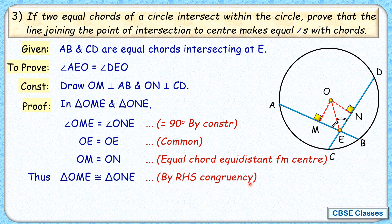Now as the triangles are congruent then of course the corresponding parts will be equal. So we can say that angle OEM or MEO is equals to angle NEO by CPCT. As this MEO is equals to NEO, so basically AEO is equals to angle DEO. And that's what we had to prove.